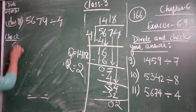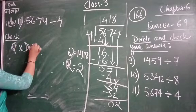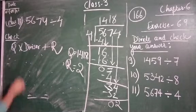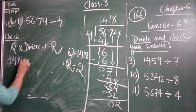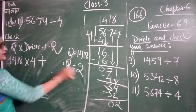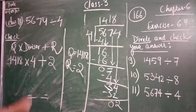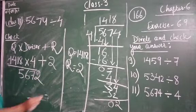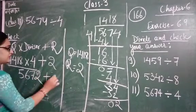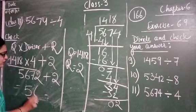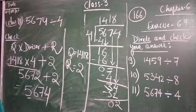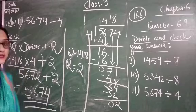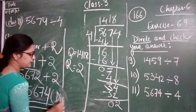Let us check. Quotient × divisor + remainder: 1418 × 4 + 2. Multiplying 1418 by 4 gives 5672. Adding the remainder 2, we get 5674. Match this answer with the dividend: 5674 equals 5674. They are the same, meaning we are getting the dividend. Our answer is verified.